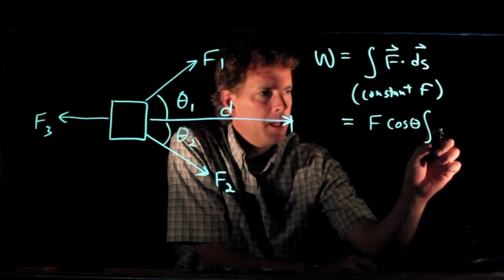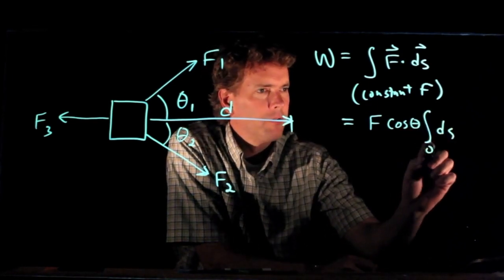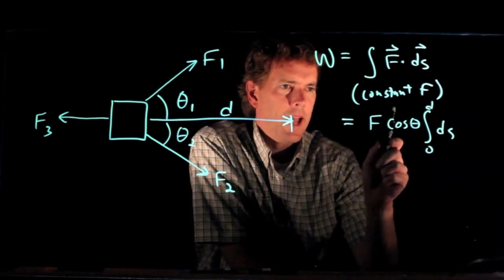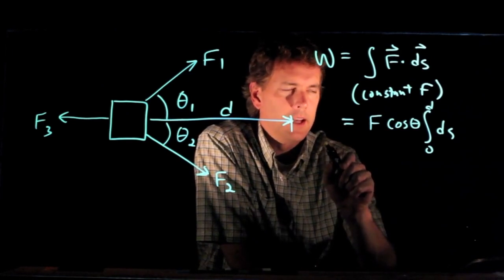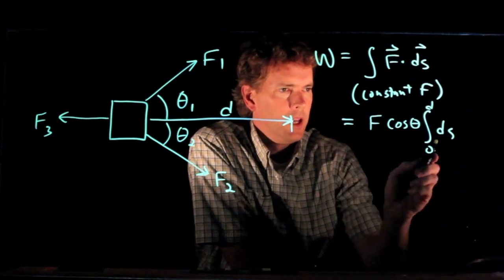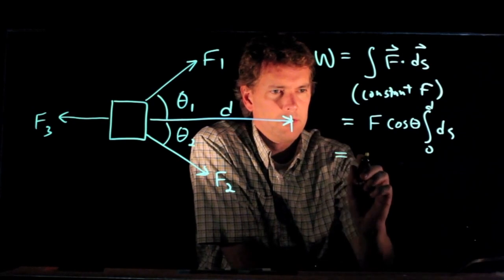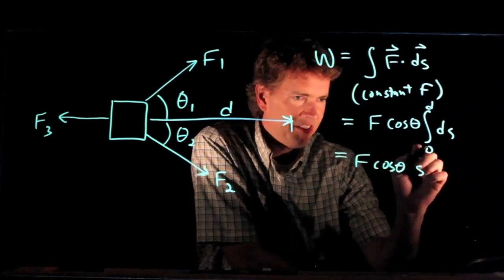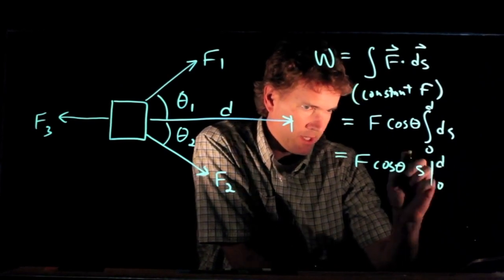times the integral of dS from 0 to d. Remember the dot product there tells us that we have to include the cosine of the angle between those two. Integral of dS just becomes S evaluated from 0 to d.